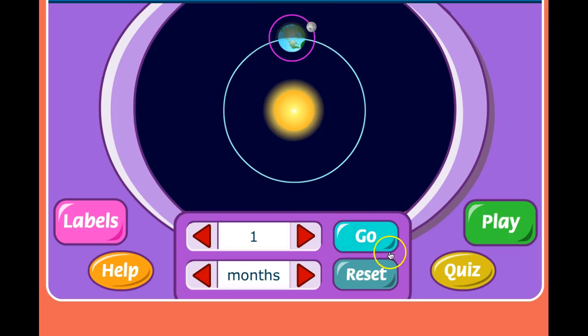Ready? We're going to watch the moon. I'm going to click now. Go, one. Go, two. Go, three. Go, four. Go, five. Go, six. Go, seven. Go, eight. Go, nine. Go, ten. Go, eleven. Go, twelve.